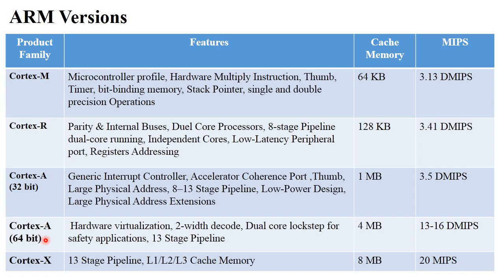The Cortex-A 64-bit and Cortex-X are the latest ARM processors. They provide different features like a 13-stage pipeline, different cache memory sizes, and they support 4 MB to 8 MB memory with 20 to 30 million instructions per second. So these are the latest ARM processors and their features. You should review all these features with their memory and million instructions per second. The latest ARM processors are Cortex-A and Cortex-X.